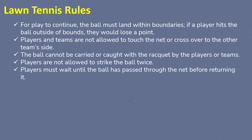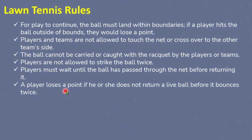Players must wait until the ball has passed through the net before returning it, and the racket of the player must not go into the opponent's court. A player loses a point if he or she does not return a live ball before it bounces twice — it is considered good if the ball bounces once in the court, but if it bounces twice the player loses the point. The player must hit the ball before it bounces twice.